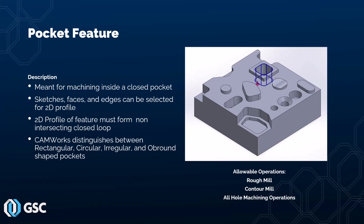Next, I'll show you how to define a pocket feature. As the name implies, it's meant for machining some sort of recessed or closed pocket area. To define the 2D profile, you can select sketches, faces, or edges. The 2D profile must form a non-intersecting closed loop. The allowable operations are rough mill and contour mill — and if it's a circular profile, you could also use hole machining operations.